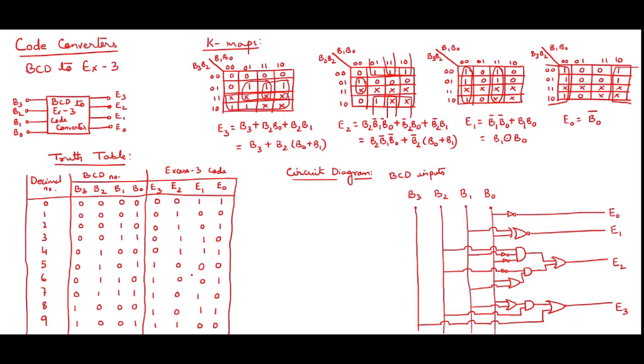Accordingly, I have given the bit values over here. Once this table is over, what do I want? I want XS3 code from the input of BCD. That means I need a circuit for this XS3 code to get generated. So this E3, E2, E1, E0, for this I need equations.